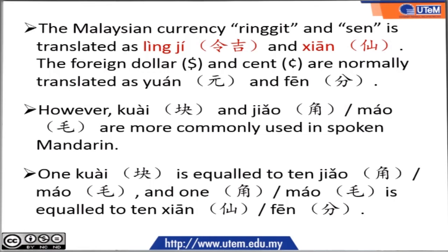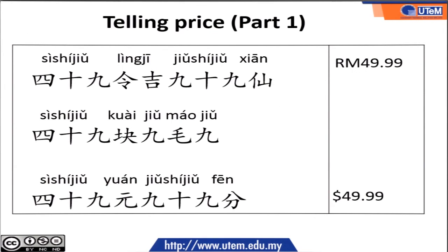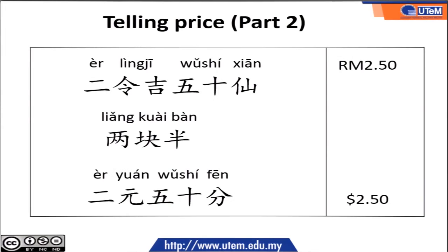Let's go to some examples. For RM49.99, the formal Mandarin is 四十九令吉九十九仙, but 四十九块九毛九 is more common in spoken Mandarin. Let's see another example: RM2.50 — formally 两令吉五十仙, but 两块五 is more commonly used in spoken Mandarin. Here, 块 is the main word for ringgit, and 半 means half, so RM2.50 can also be said as 两块半.